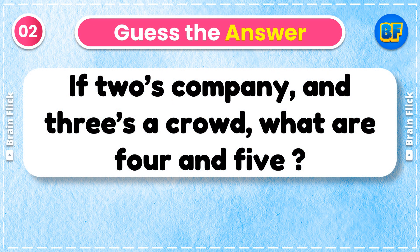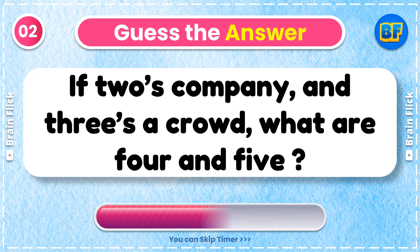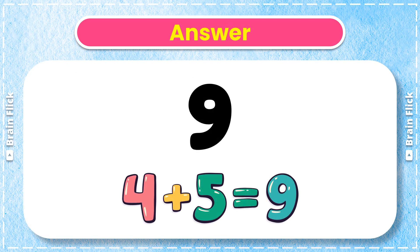Riddle 2. If 2's company and 3's a crowd, what are 4 and 5? Answer: 9.